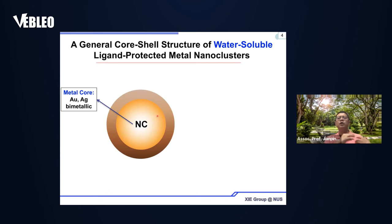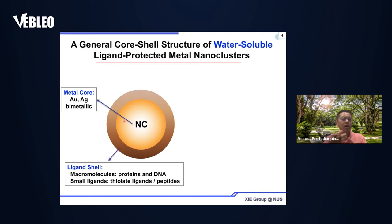For biomedical applications, the design of this outer shell is very, very important. Our biological system will first see this outer organic shell when we inject these materials inside our body. So we need to make sure this organic shell has very good biocompatibility. Over the past 10 years, we found out we can use biomolecules as protecting ligands — for example, proteins, DNA, biocompatible thiol ligands, or peptides — and they can enhance biocompatibility.